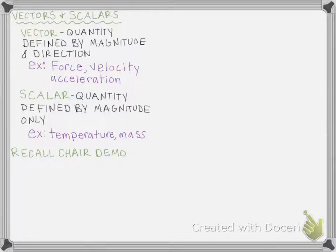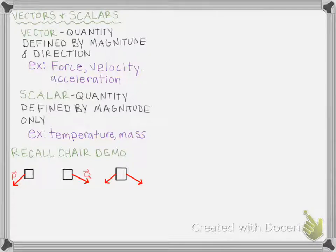We're going to start by thinking about the demo done today in class on the first day, where we had a chair and pulled it three different ways. In the first instance, we had the chair pulled by some force P, which had both a magnitude and a direction. The chair moved along the direction of force P, and it could get bigger or smaller depending on how much force was applied. Then we did the same with two students pulling at the same time, and discovered the chair would move along some other direction — not along P and not along Q.